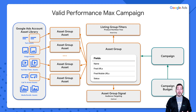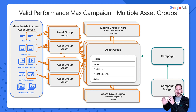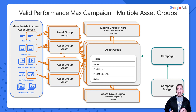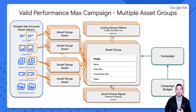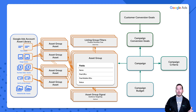We can also do this with multiple asset groups. In that case, we still have one asset library, one campaign and one campaign budget, but we have several asset groups. The number of asset groups will dictate the number of asset group assets we have, the number of listing group filters, as well as the number of asset group signals. This brings us back to the diagram from the first episode, which represents everything we're going to do in the entire code walkthrough. I want to take a step back before jumping into the code to explain what asset groups are actually doing and why we might want multiple asset groups in a single campaign.